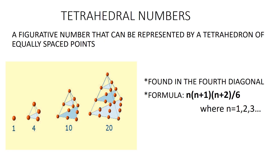Next is tetrahedral numbers. A tetrahedral number is a figurative number which represents the number of dots that can be uniformly arranged in a regular tetrahedron, a triangular base pyramid. The sequence is 1, 4, 10, and so on. The general formula is n(n+1)(n+2)/6, where n belongs to natural numbers. These numbers are found on the fourth diagonal of Pascal's Triangle symmetrically.